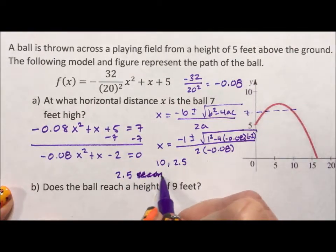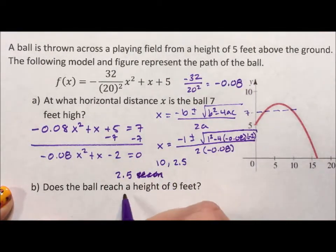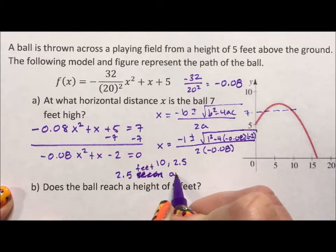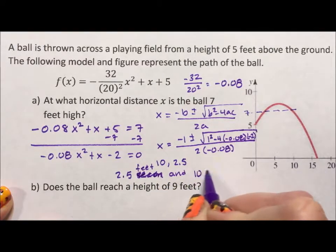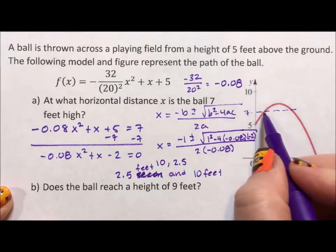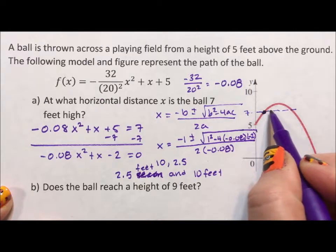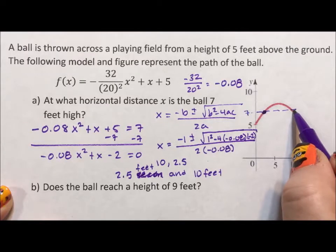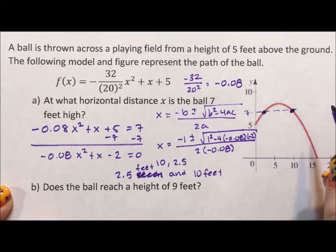Sorry, it's distance. At 2.5 feet and 10 feet. So you throw the ball and when it's 2.5 feet away from you, it's hitting 7 feet and it continues to go up. And then when it gets to be 10 feet away from you, it's hitting that 7 feet again.